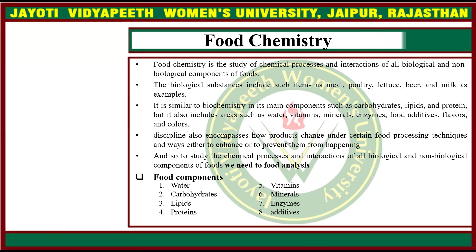Food chemistry is basically the study of chemical processes and interactions of all biological and non-biological components of foods. Biological substances include items such as meat, poultry, lactose, beer and milk. It is similar to biochemistry in its main components such as carbohydrates, lipids and proteins, but also includes water, vitamins, minerals, enzymes, food additives, flavors and colors. The discipline also encompasses how products change under certain food processing techniques and ways to either enhance or prevent those changes. To study these interactions, we need to analyze the food.